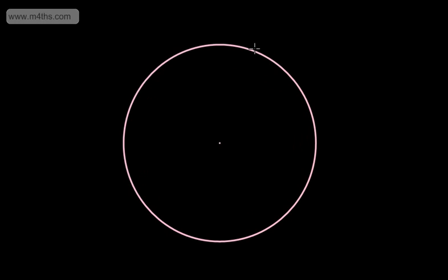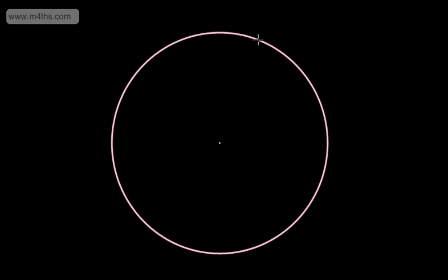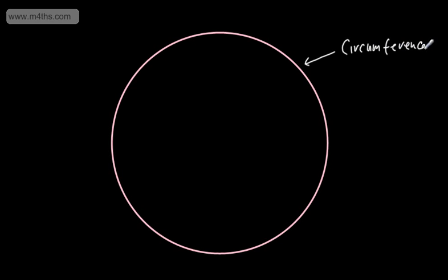Here's my circle in the centre of the page. The distance around the outside is called the circumference. So here we have the circumference — that is the distance around the outside.